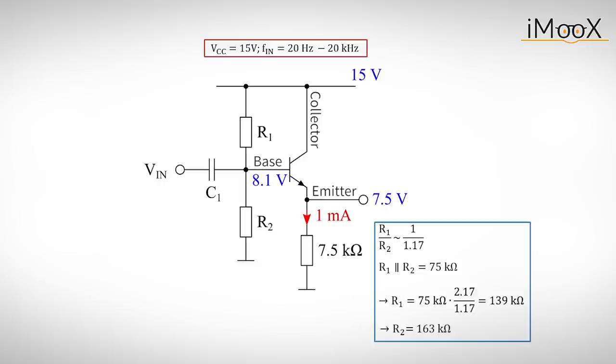Those exact resistor values are not commercially available, so we take comparable values which can be found in the E24 standard resistor series. This gives us 130k for R1 and 150k for R2.